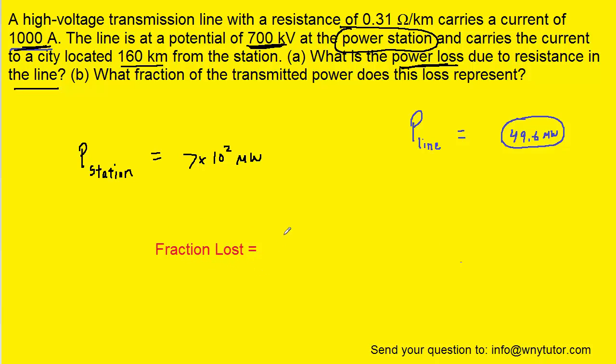To figure out the fraction of power lost, we simply have to take the power that was lost in the line and divide that by the total power produced by the station. Now of course we have both of these values so we can plug in. And when we compute this, the megawatts will cancel out. We get approximately 0.071 as the fraction. If we wanted to convert that into a percent, we would just move the decimal over 2 times to the right. So that's going to give us approximately 7.1%. So in other words, 7.1% of the power that's produced by the station is lost in the line.